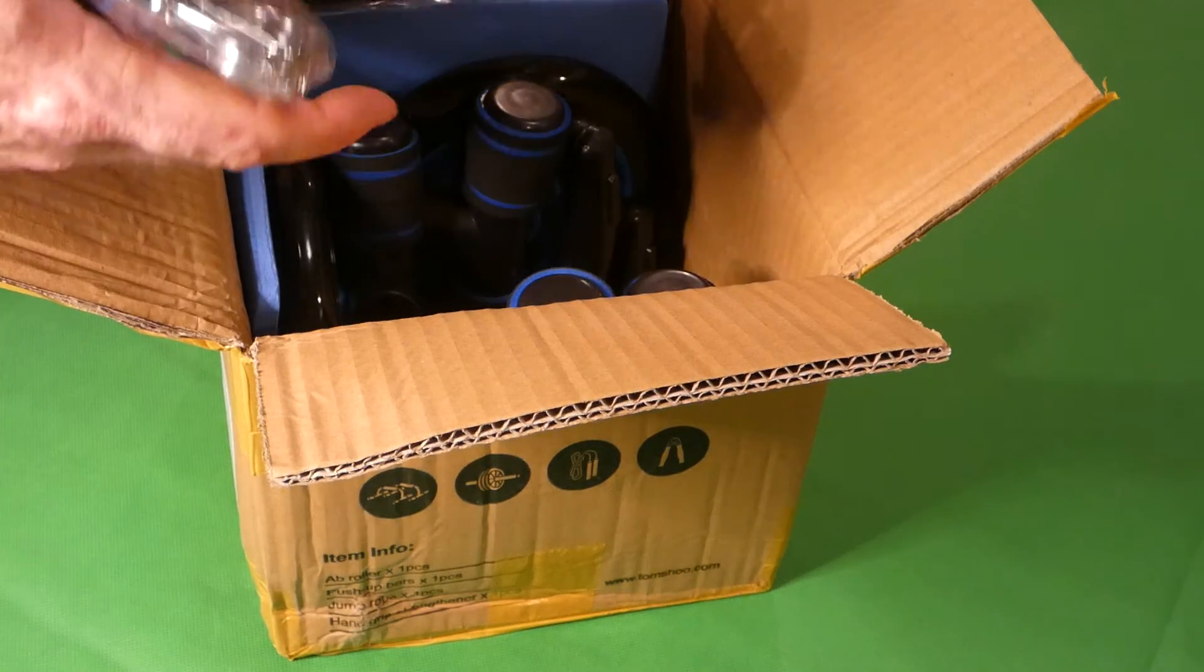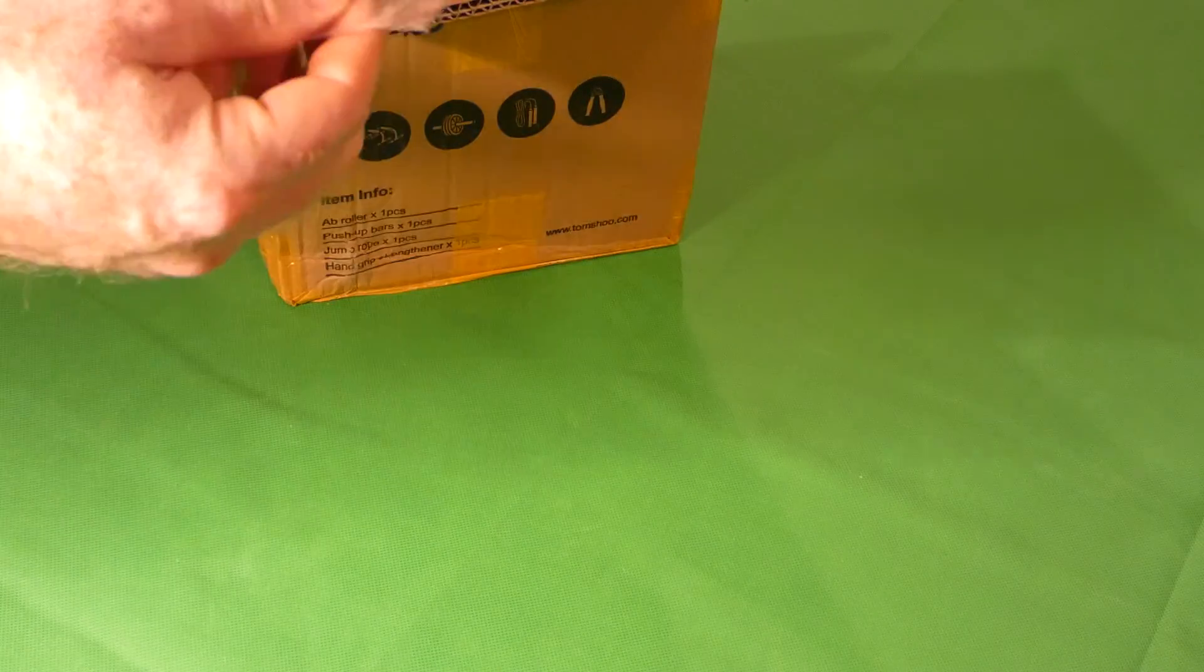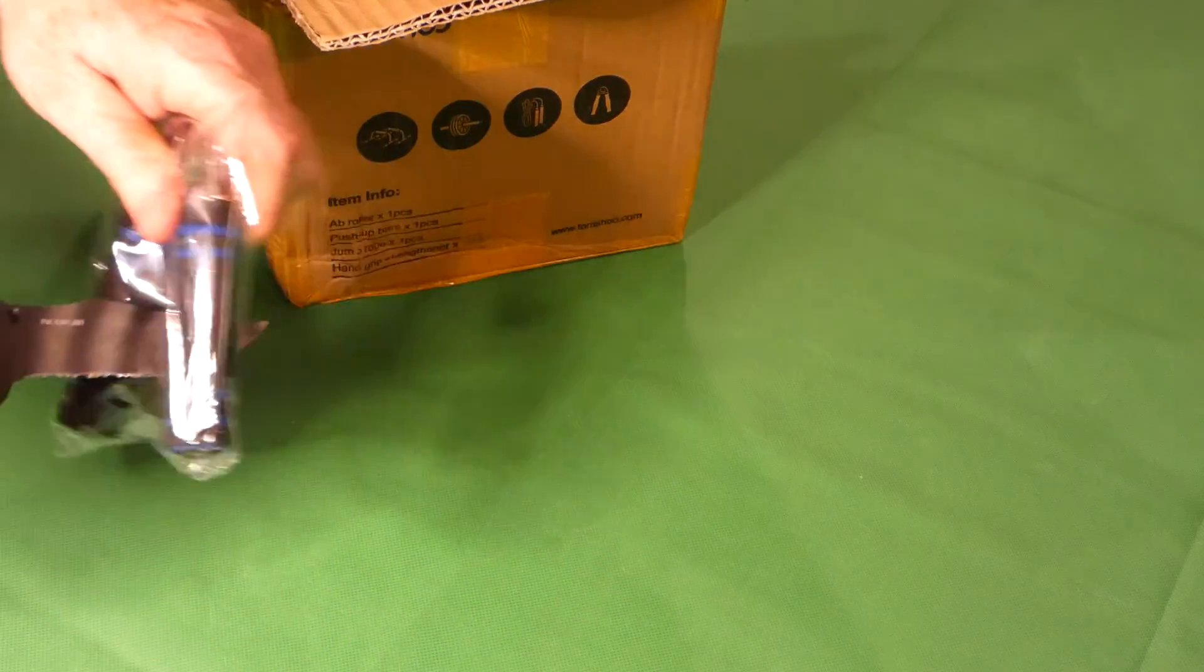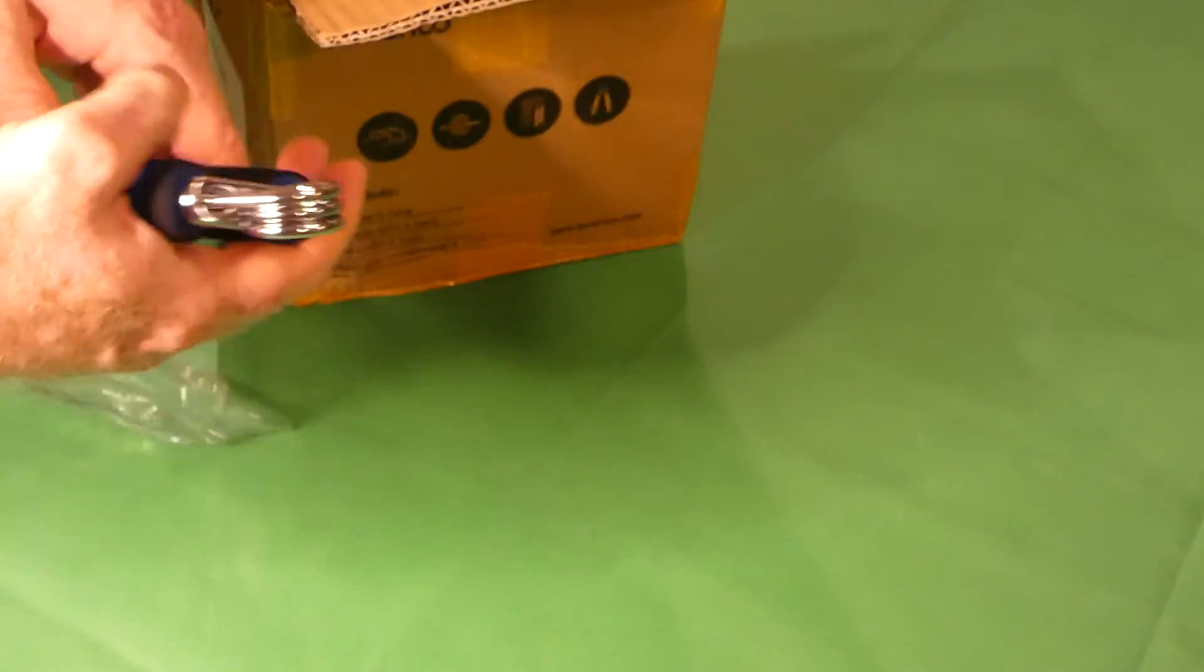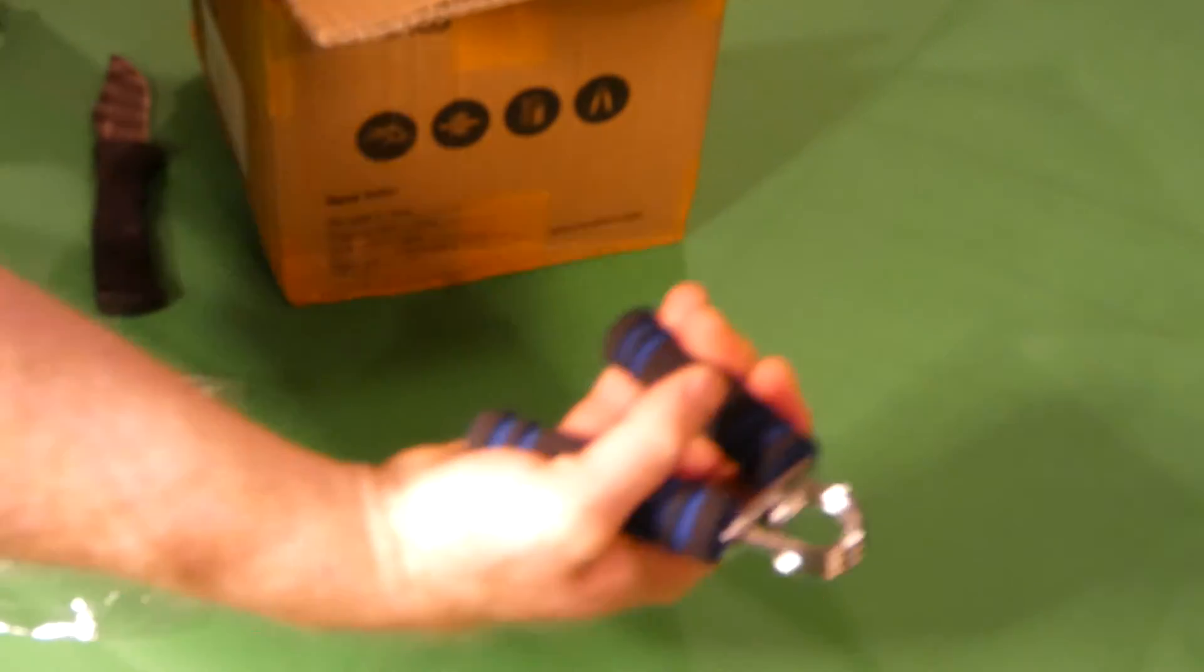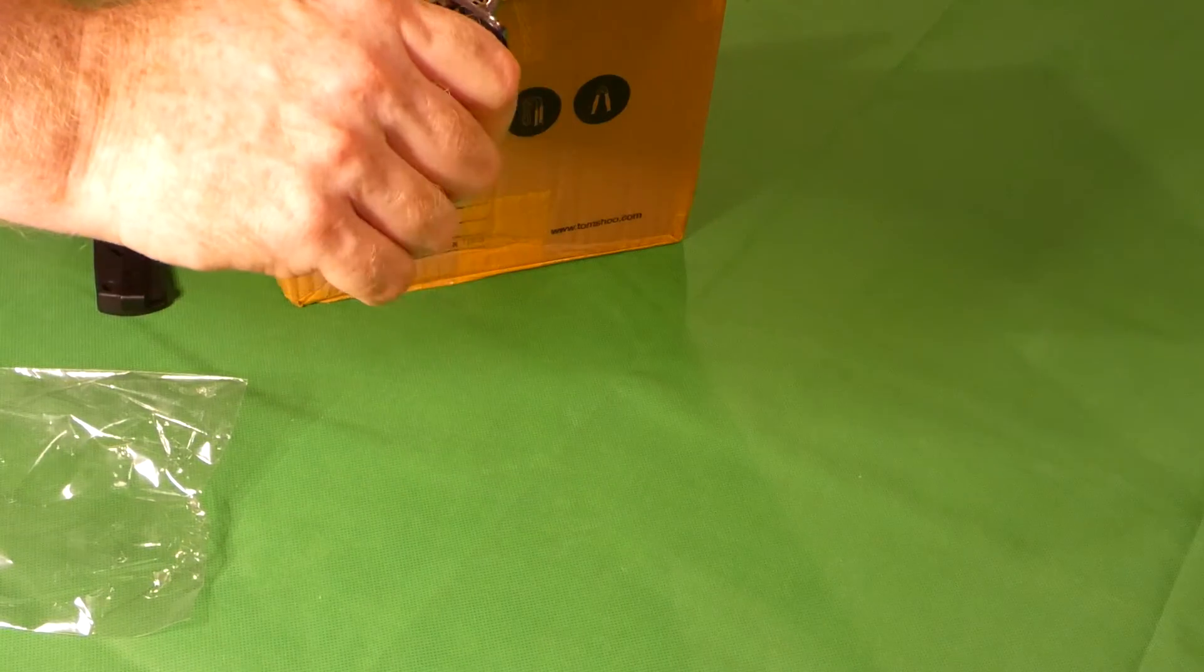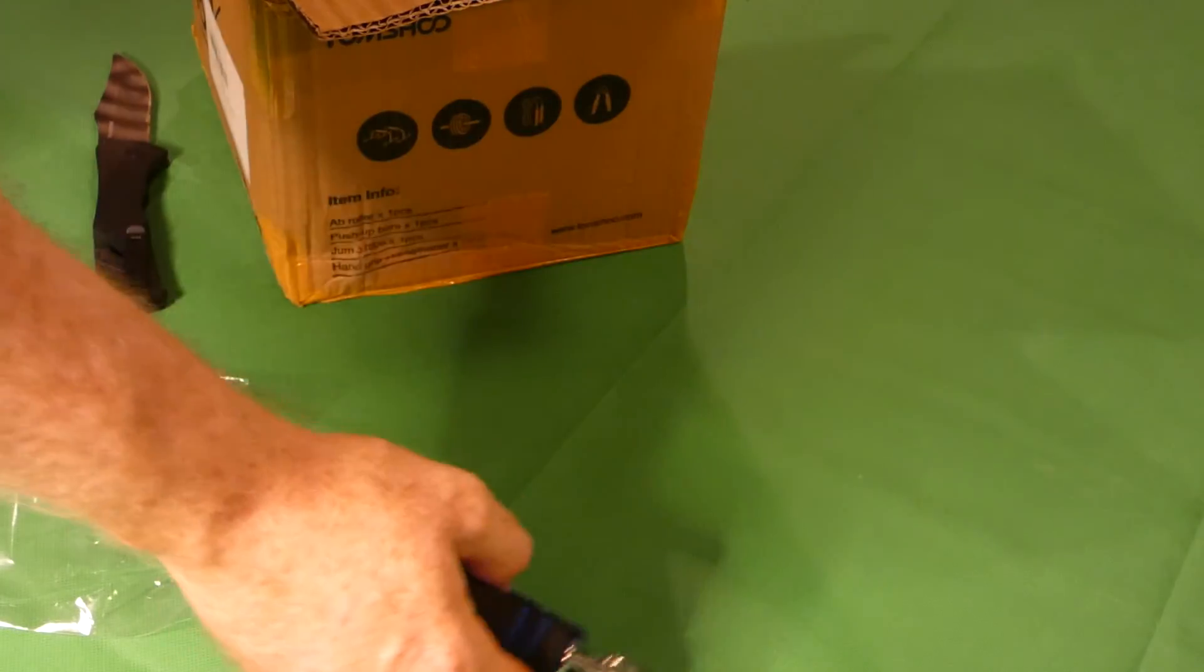Alright, so first thing out of the box are these little hand grippers. These are good for increasing your grip strength and you can feel it through the good old forearms as well. So that's a good exercise there.